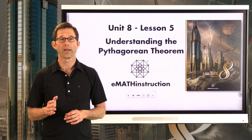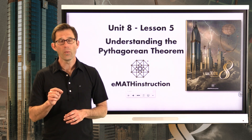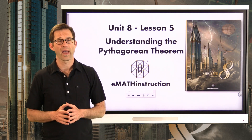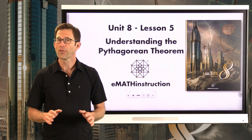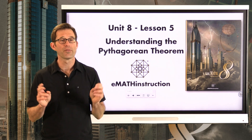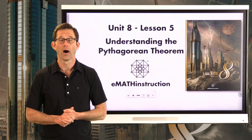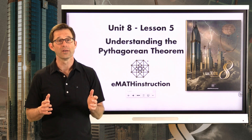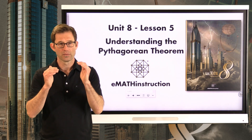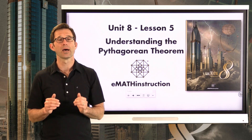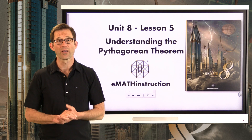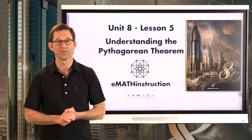This is our last lesson on the Pythagorean Theorem, and what we want to do in this lesson is show you why the Pythagorean Theorem is true. There are many what are known as proofs of the Pythagorean Theorem — literally hundreds of them — and we're just going to look at one today, and we're going to build it up step by step, so hopefully you see at the end why in a right triangle, a squared plus b squared must be equal to c squared.